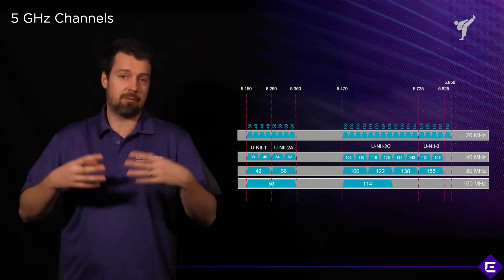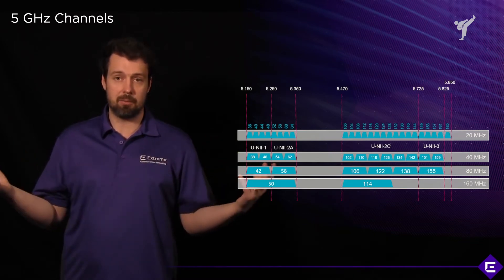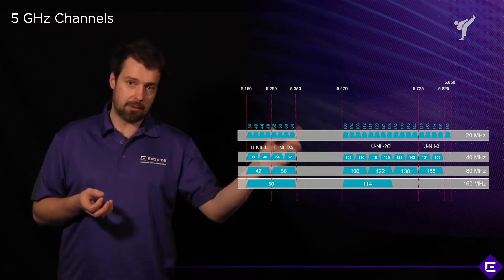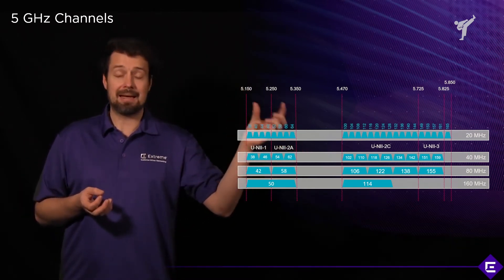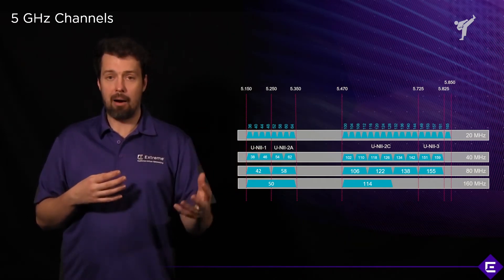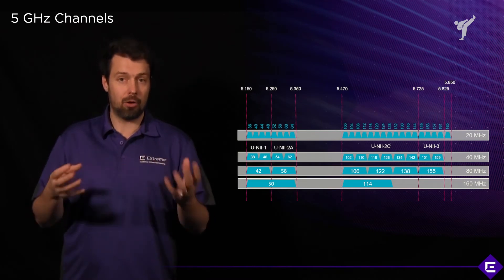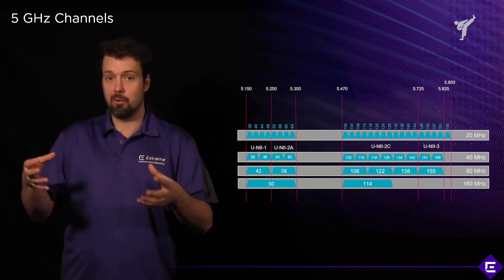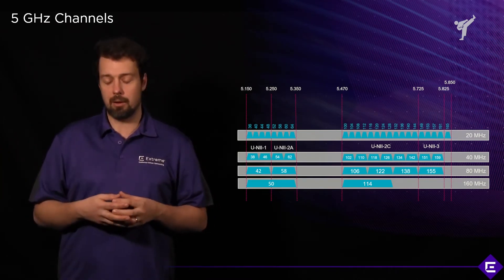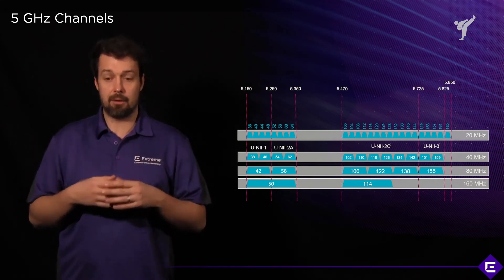If you have a deployment that spans across multiple countries, in ExtremeCloud IQ you will be able to select the country code, and that country code will enforce the power and channel selection settings for that country. To know what those limitations are, please refer to your regulatory domain authority.